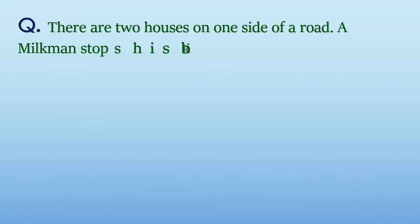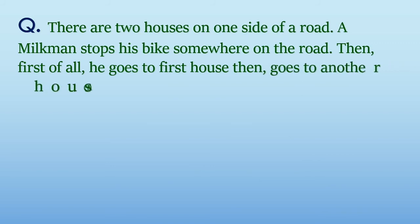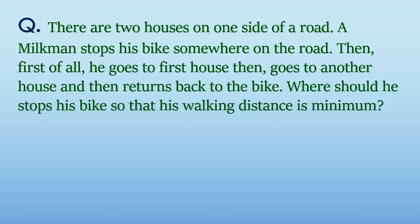There are two houses on one side of a road. A milkman stops his bike somewhere on the road. Then first of all, he goes to first house, then goes to another house, and then returns back to the bike. Where should he stop his bike so that his walking distance is minimum?